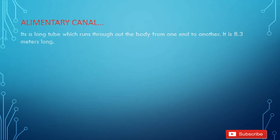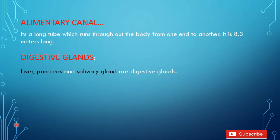The digestive system comprises two main parts: the alimentary canal and the digestive glands.